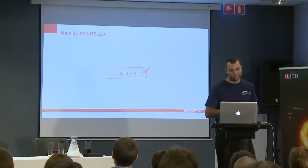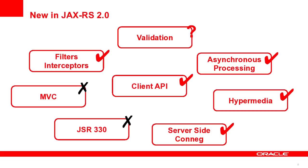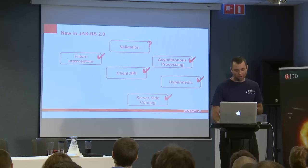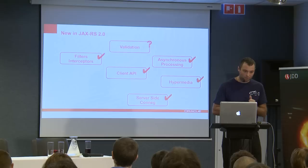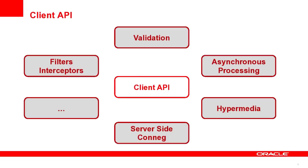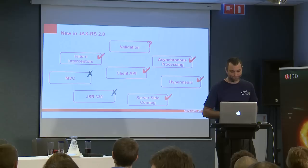So what made it into JAX-RS 2.0? The client API was selected and made it in, as well as filters and interceptors. Validation has a question mark - I'll come to that later. Asynchronous processing is included. Hypermedia as well. Server-side content type negotiation as well. But dependency injection and MVC didn't make it in - I'll tell you why after I cover the topics that were selected.